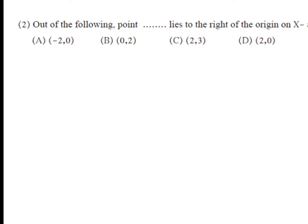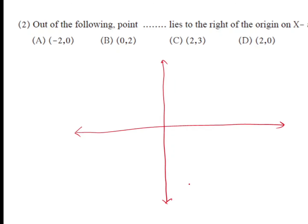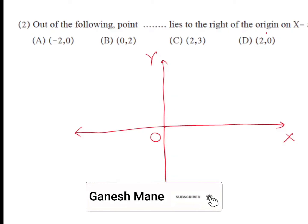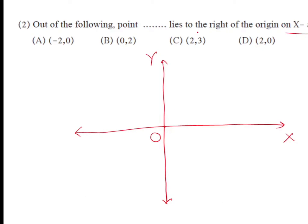Next question: out of the following points, which point lies to the right of the origin on the x-axis? Four alternatives are given. We use the Cartesian coordinate system — horizontal x-axis and vertical y-axis intersecting at origin O. The point must be on the x-axis and to the right of the origin, which corresponds to the positive x-axis region. Any point on this part must have a positive x-coordinate.